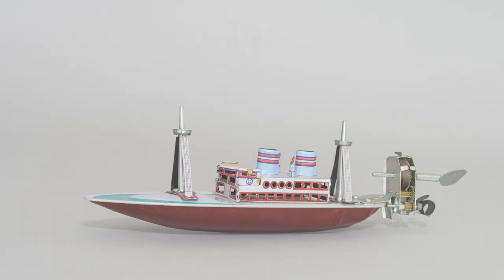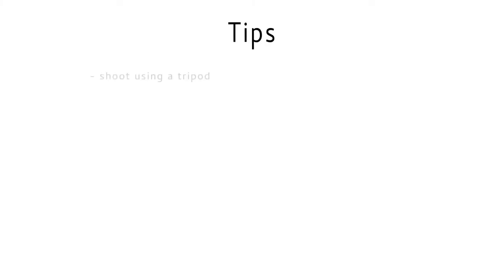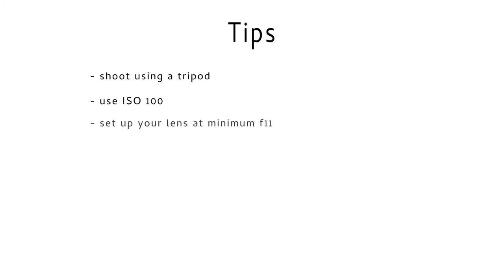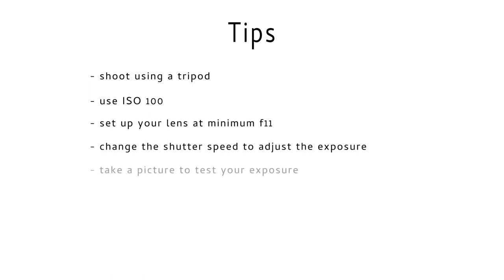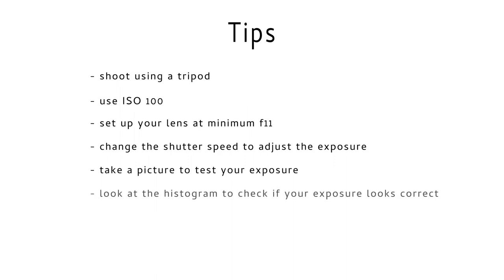A couple of tips: Shoot using a tripod. Use ISO 100. Set up your lens at minimum F11. Change the shutter speed to adjust the exposure. Take a picture to test your exposure. Look at the histogram to check if your exposure looks correct. And adjust the shutter speed if needed.